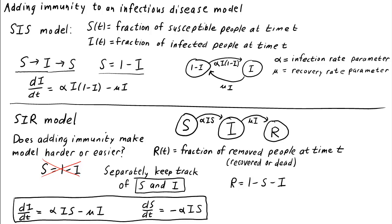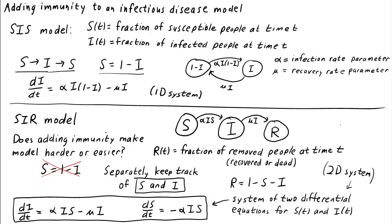These two differential equations form a system of equations to determine the evolution of the two state variables s of t and i of t, or sometimes we'll just call it a two-dimensional system of differential equations. Two-dimensional systems are indeed trickier than one-dimensional systems, or single autonomous differential equations, like our SIS model.